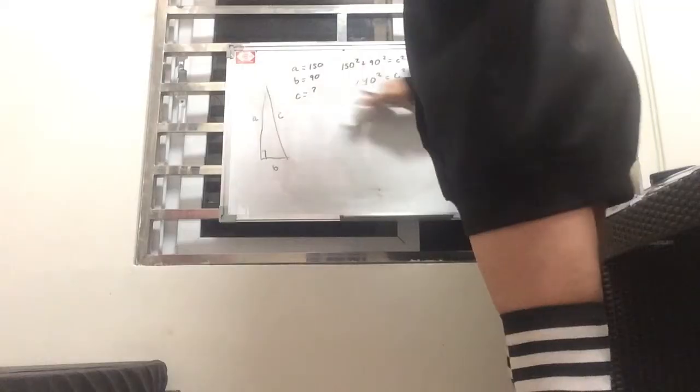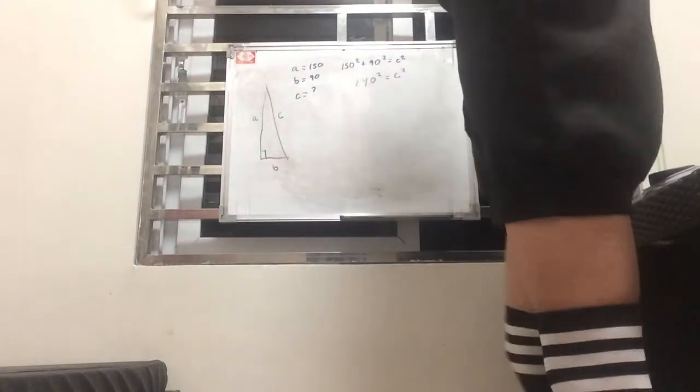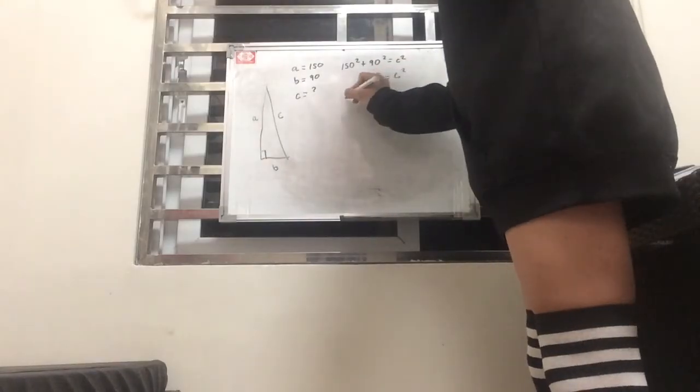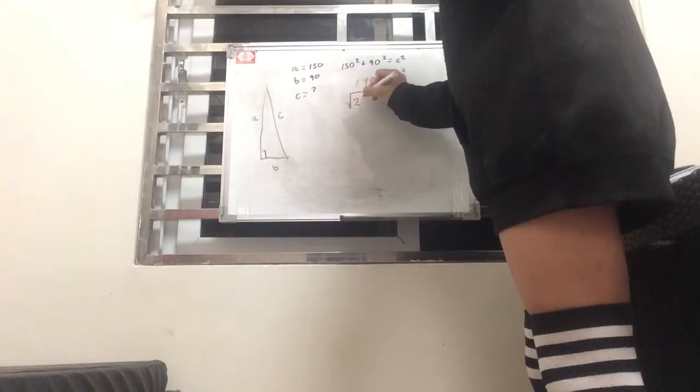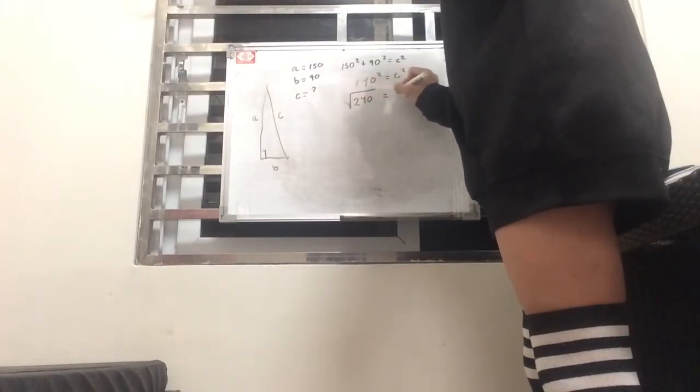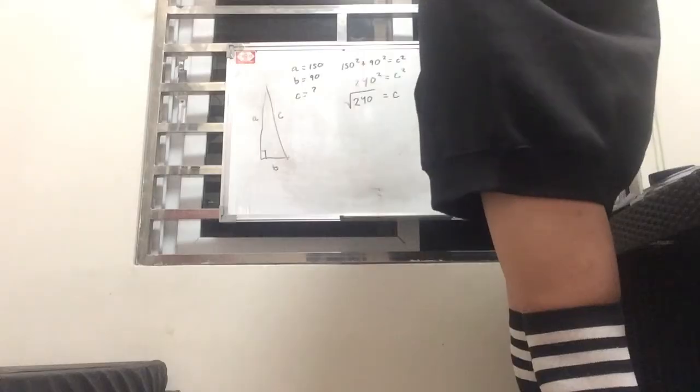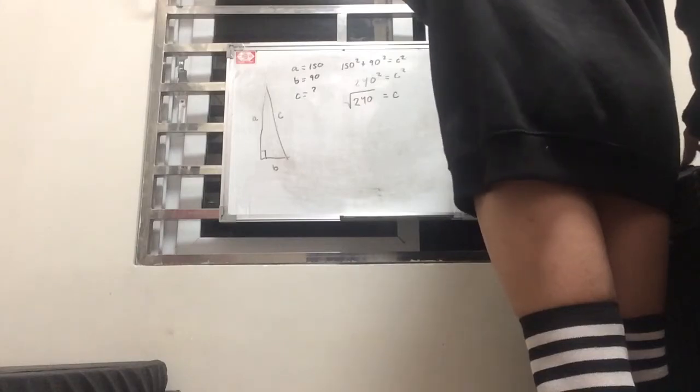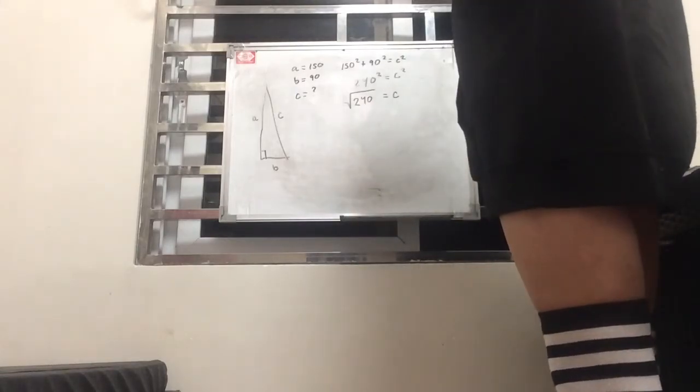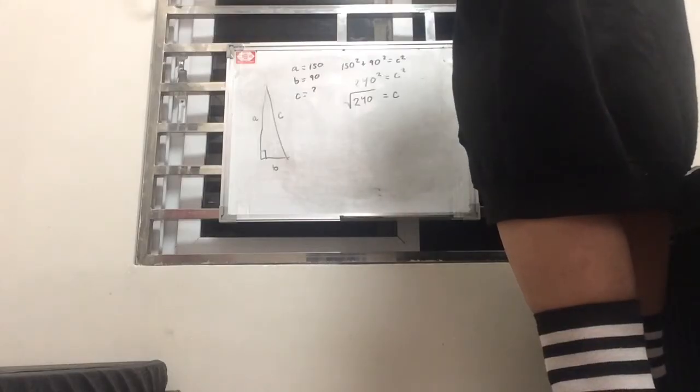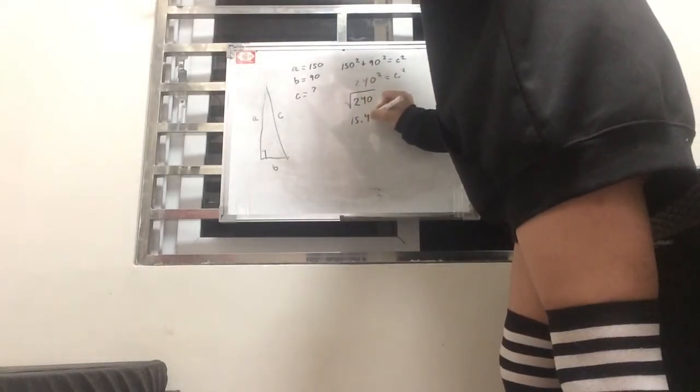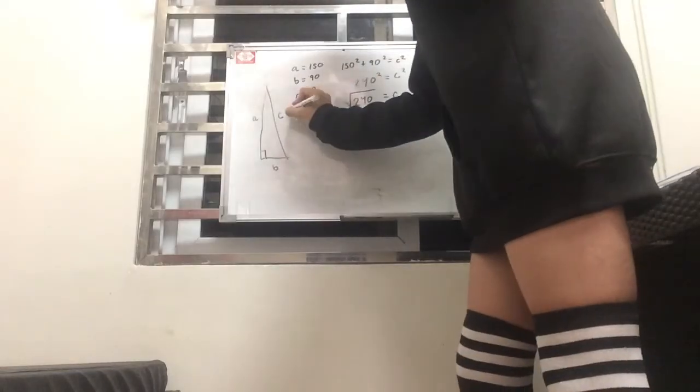So then how do we find out? Basically we just do what we need to do. We have to find the square root of c to eliminate the square symbol. And that would be the square root of 240. So that would be 15.49193338, or just simply if we're going to round it off to two decimal places, 15.49. So c is 15.49.